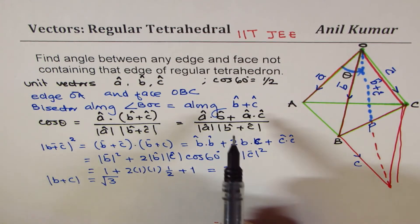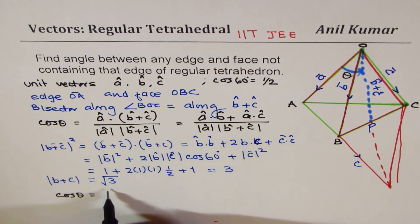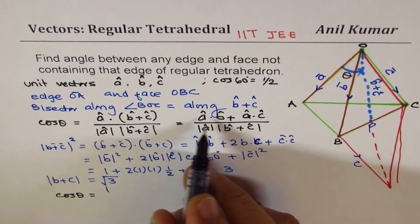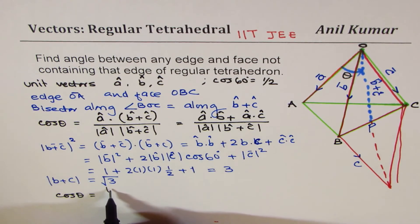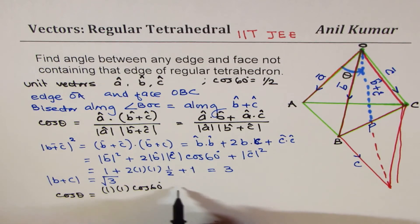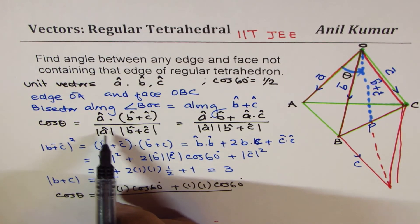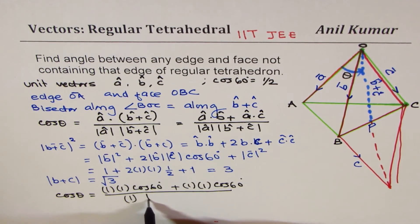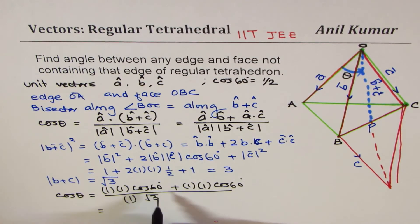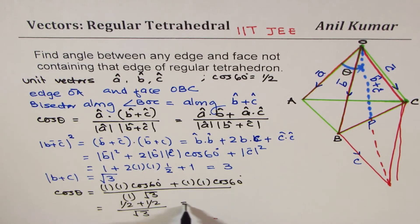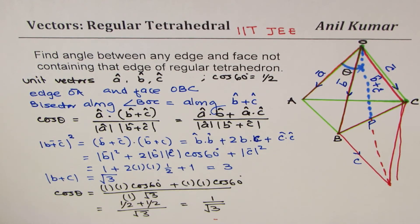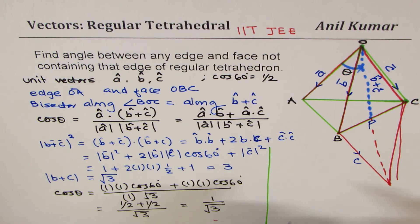Now substituting: cos θ = (a·b + a·c) / (|a| × |b+c|) = (1×1×cos 60° + 1×1×cos 60°) / (1 × √3) = (1/2 + 1/2) / √3 = 1/√3. Therefore θ = cos⁻¹(1/√3).